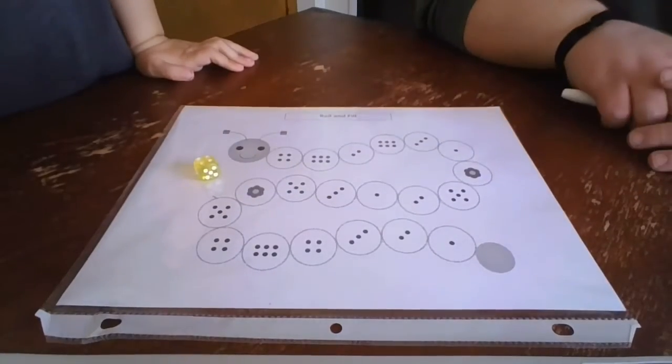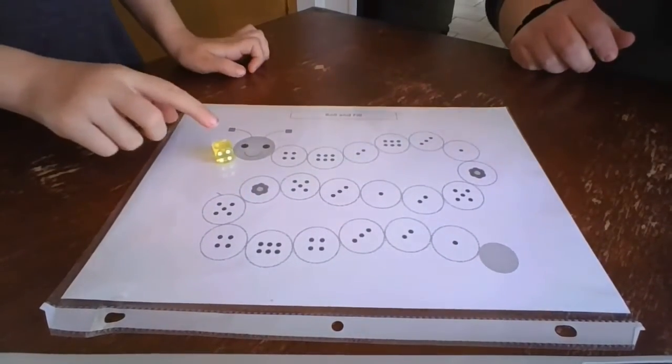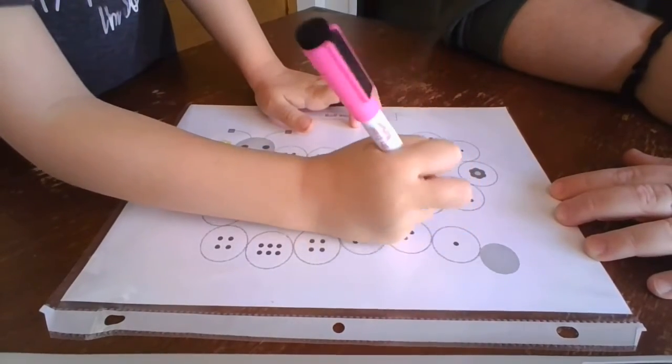All right, can you roll that dice? What number did you get? Two. So then you're gonna find two dots on the caterpillar.